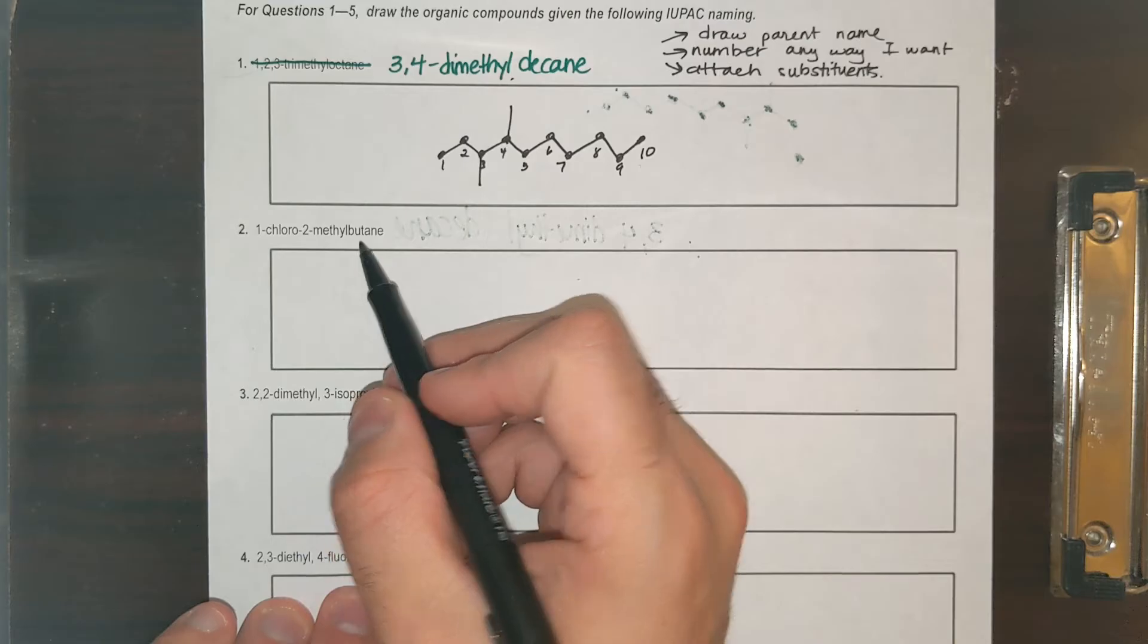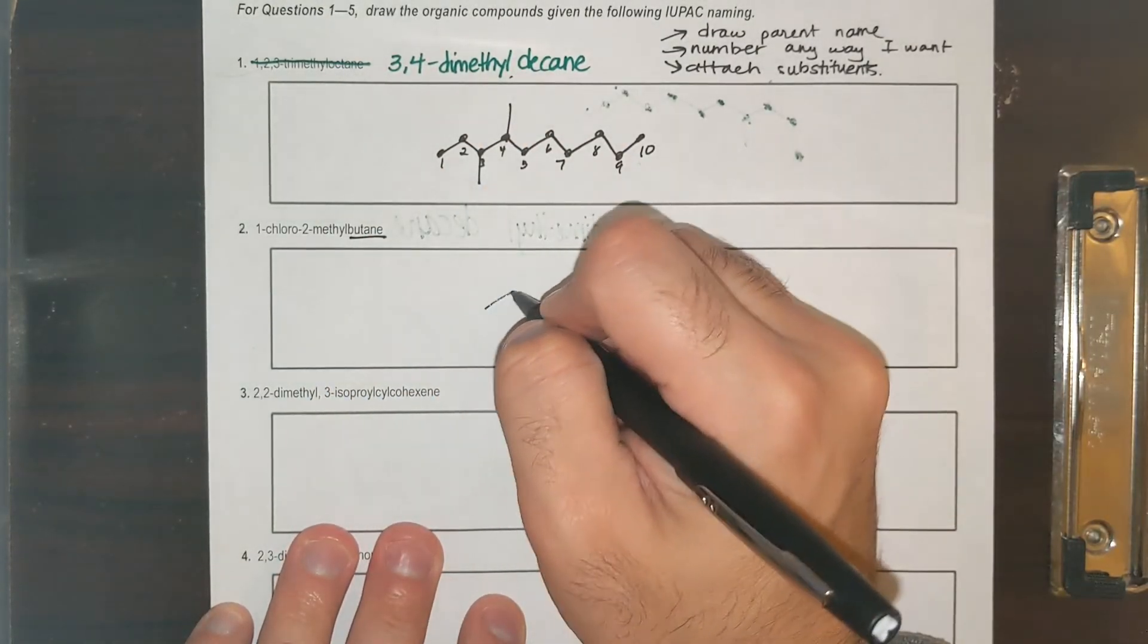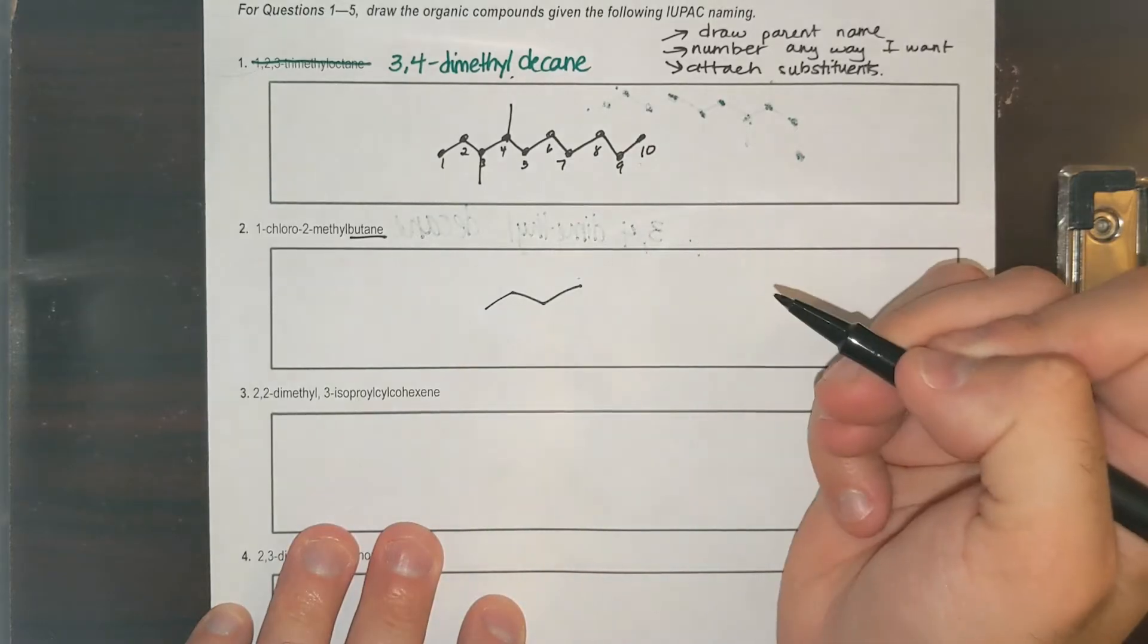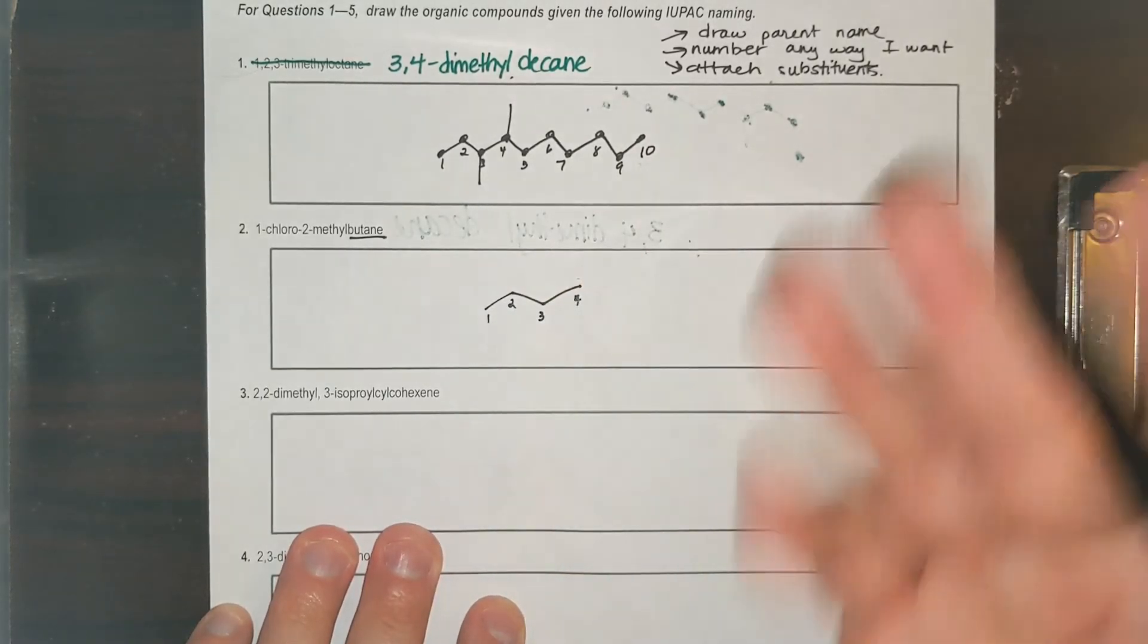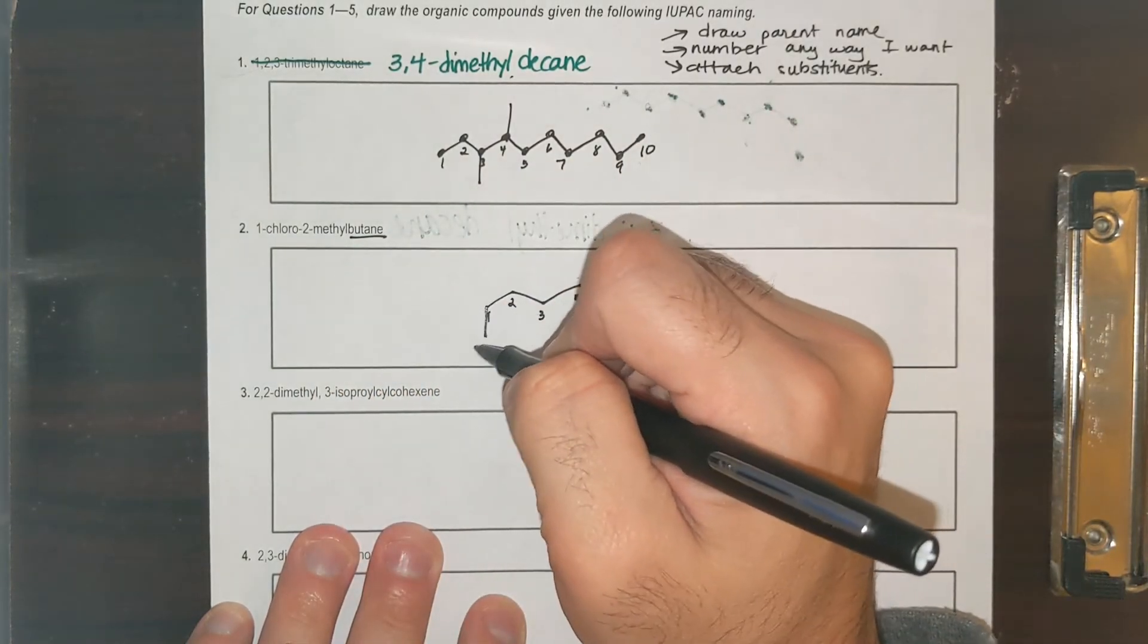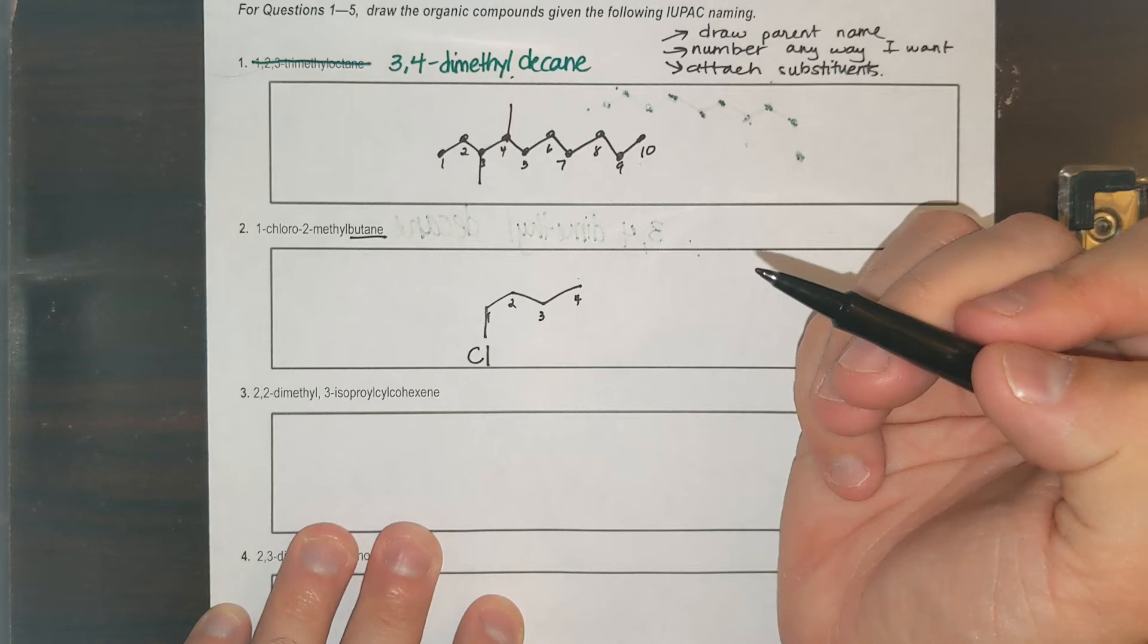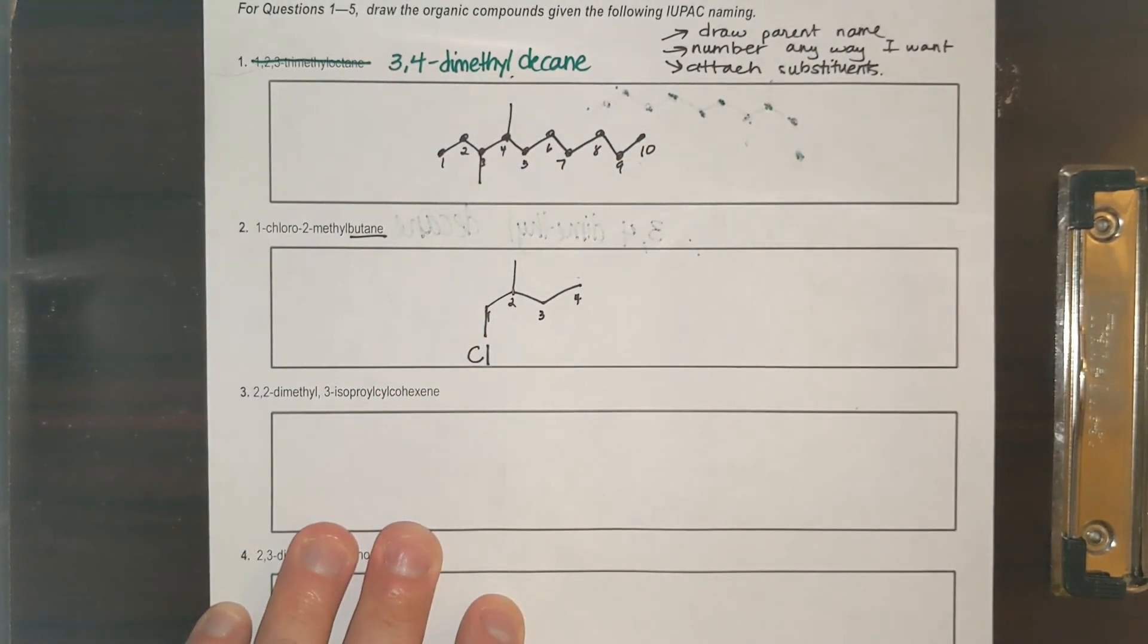1-chloro-2-methyl butane. So butane is the parent name. One, two, three, four. You get to number it, it doesn't matter. 1-chloro, so I'll put chlorine on the first carbon, and then 2-methyl. Now I have a methyl there. Butane, done.